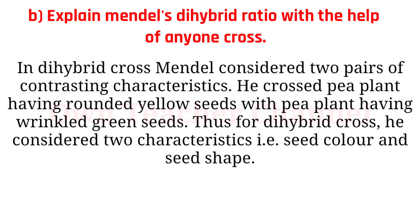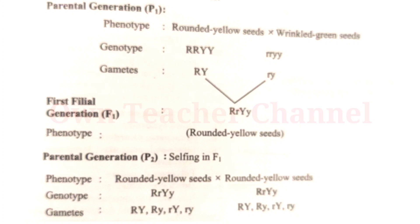Explain Mendel's dihybrid cross with the help of an example. In the dihybrid cross, Mendel considered two pairs of contrasting characteristics. He crossed a pea plant having rounded yellow seeds with a pea plant having wrinkled green seeds, considering seed color and seed shape. F1 generation of the dihybrid cross produced rounded yellow seeds, because round shape is dominant over wrinkled shape, and yellow color is dominant over green color of seeds.